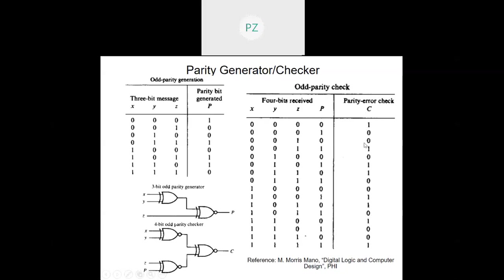This will be the parity error check for odd parity. If you want even parity, just take the complement of this column, just as for odd parity bit generation you put the inverted value of the particular column. You can realize the checker using two exclusive-NORs in the first level and another exclusive-NOR in the second level. For three-bit even parity generator, remove the inverter — use exclusive-OR followed by exclusive-OR only. For four-bit even parity checker, the two first-level gates are exclusive-NORs but the final one becomes an exclusive-OR.